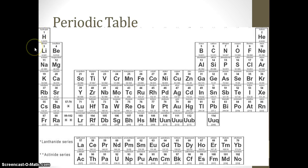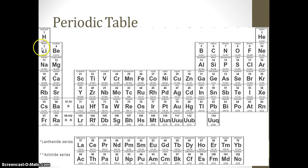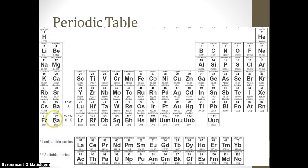Now we're going to talk about the families. The periodic table has different columns and each column represents a family. The first family, without hydrogen, will be the alkali metals. Then the second column, group two, will be the alkaline earth metals. Then we have the transition metals — basically the D block.